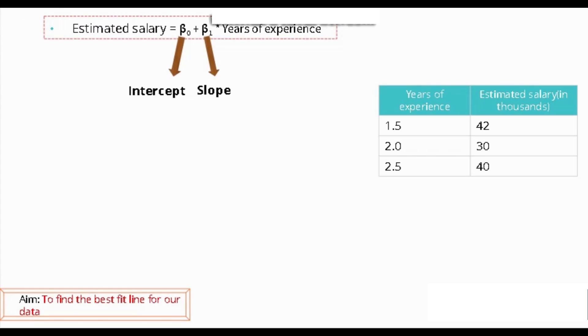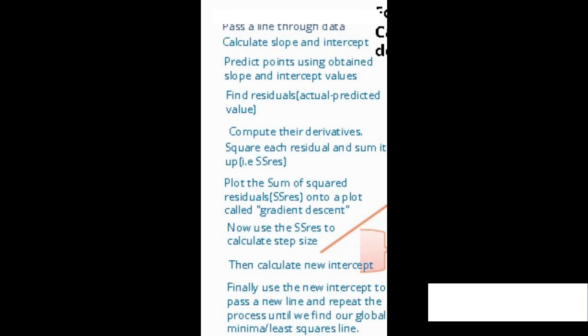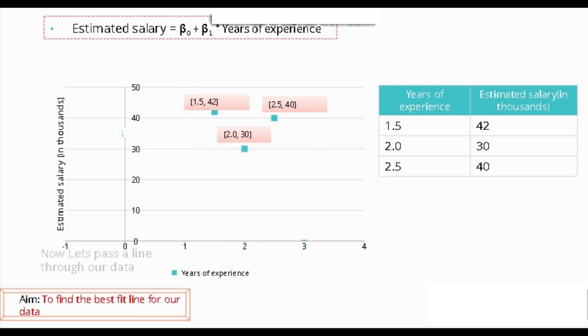Our main aim is to find the best fit line for our data. For simplicity, let's take a small sample of three data points. We will plot the points onto the graph and go through each step one by one to find the best fit line. Step 1: pass a line through the data — let's simply pass a line through the origin.